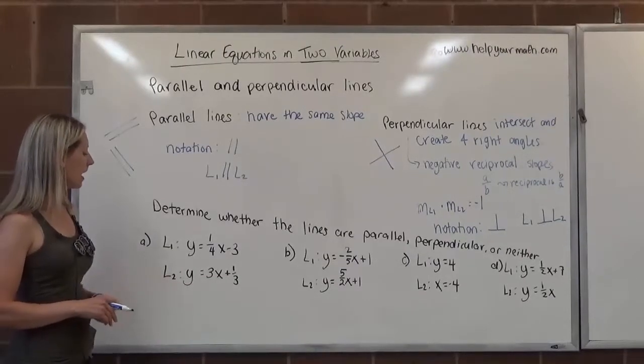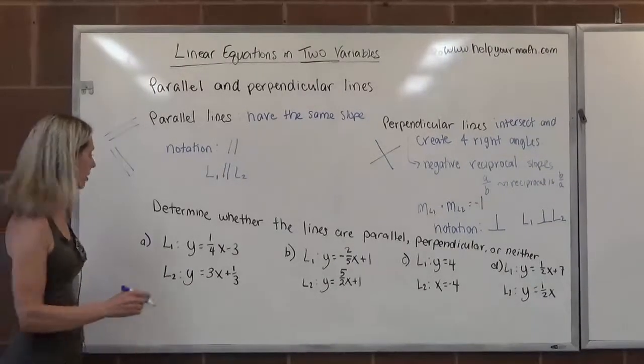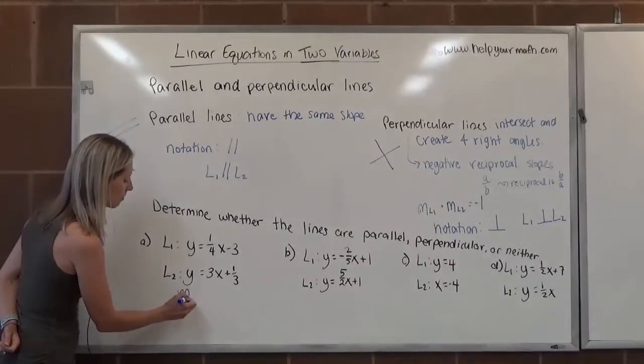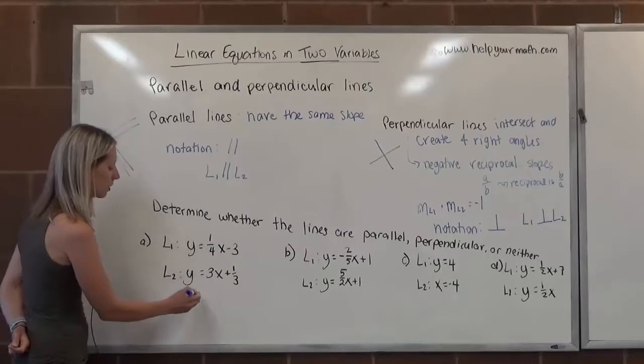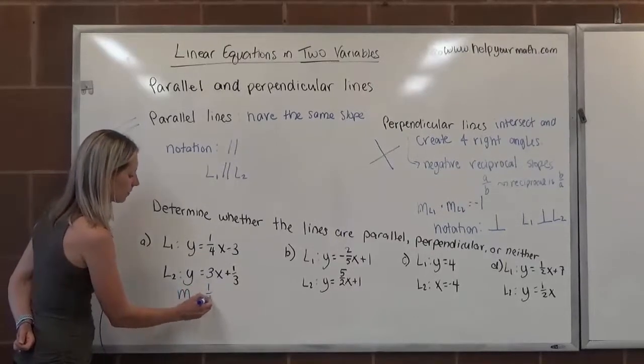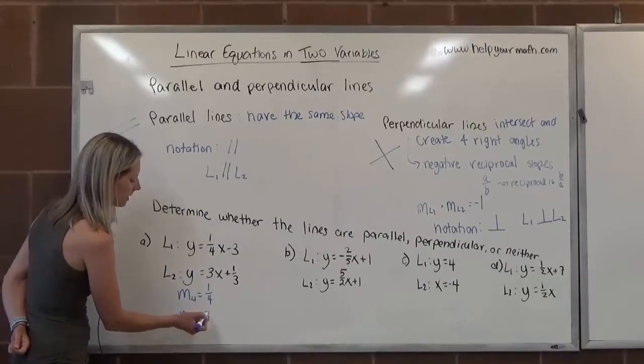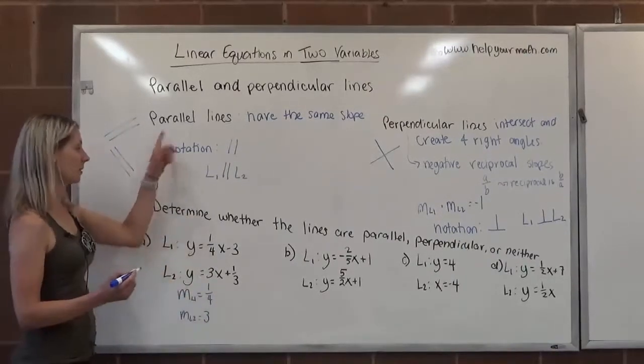The slope of the first line, so I'm going to say the slope of L1, I'll use a subscript, is one-fourth. And the slope of L2 is three. So they're not the same. The lines are not parallel.